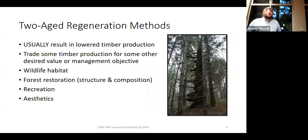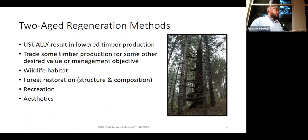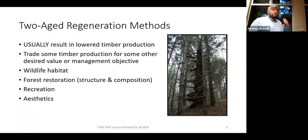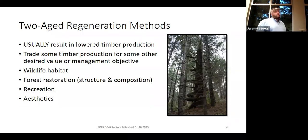Think about the two-age stand we were out in on the very first day of lab — that was a seed tree with deferment. We saw that you didn't have many trees in the younger cohort under those big trees in the older cohort, and some of those trees in the younger cohort were smaller than you might expect in an even-aged stand. When you manage with a two-age system, that suppression effect where the older cohort suppresses the younger is almost always going to result in less timber production.